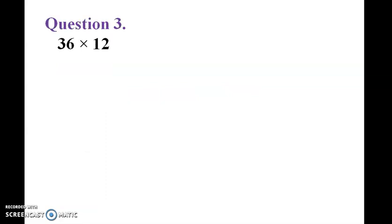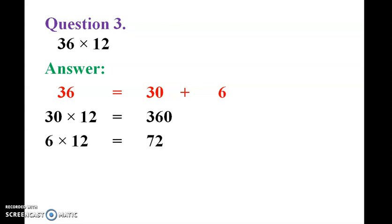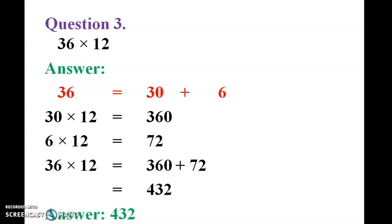Question 3: 36 into 12. This is what we need to do with subtraction. 36 is equal to 30 plus 6. So 30 into 12 is 360, 6 into 12 is 72. So now we need to add this. 432 is the answer.